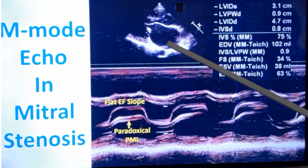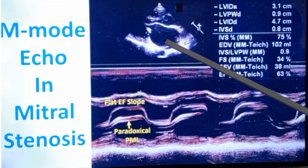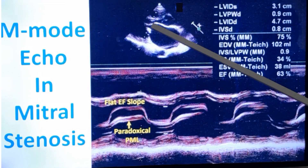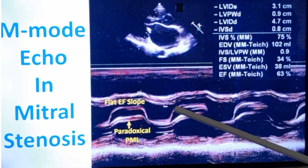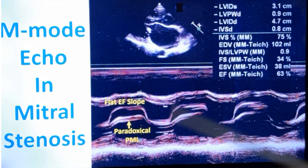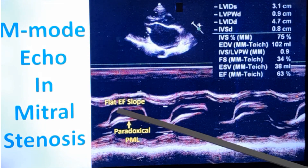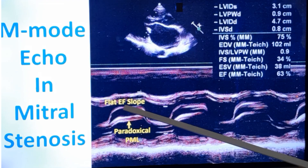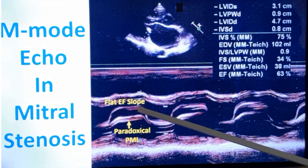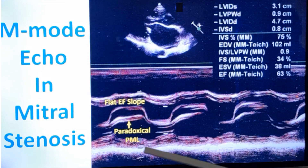You can see the left atrium is dilated in this case of mitral stenosis. There is calcification of the posterior mitral leaflet, which is moving paradoxically, and the anterior leaflet of the mitral valve is doming. These same features are seen in the M-mode echocardiogram as well — the doming corresponds to the anterior motion of the mitral leaflet. The flat EF slope is also seen.